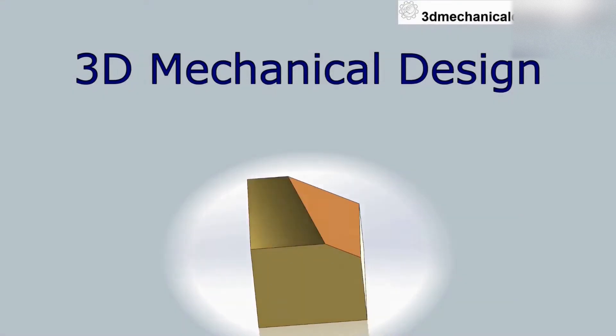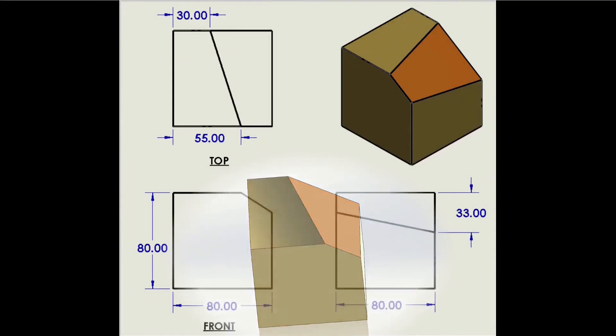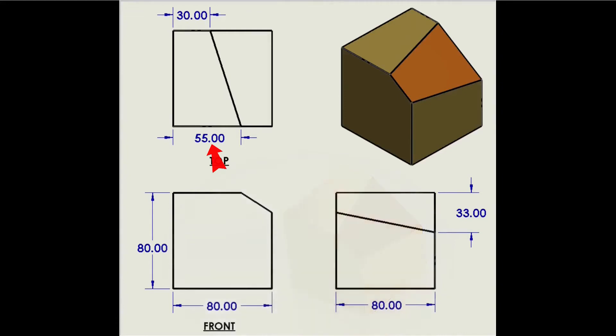In this drawing, you can see a cube, and cut out a segment on one side: 55mm by 30mm by 33mm.